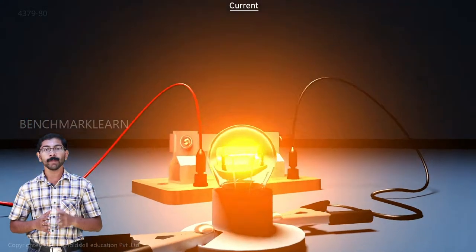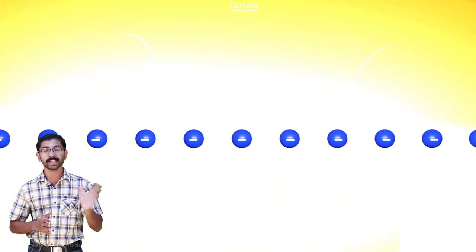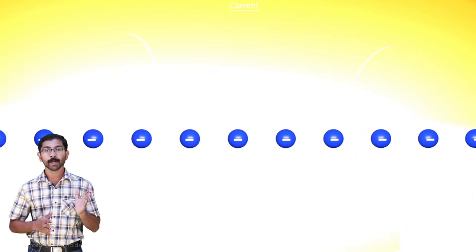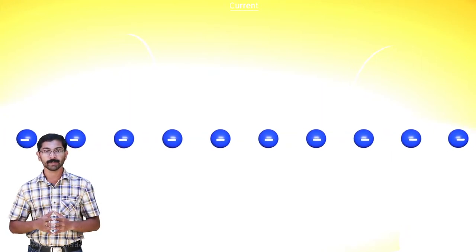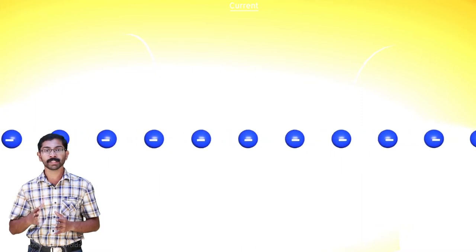Inside the filament of the lamp, the electrons start moving in almost the same direction. They may collide with stationary atoms. This slows them down and also these collisions generate heat.